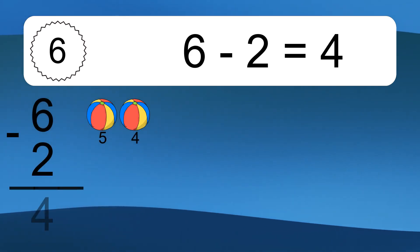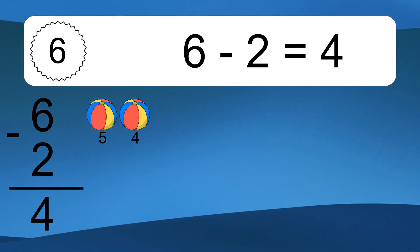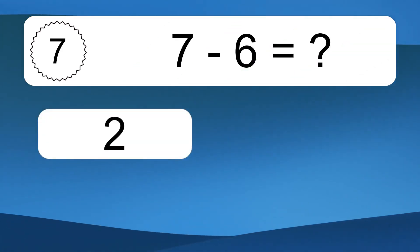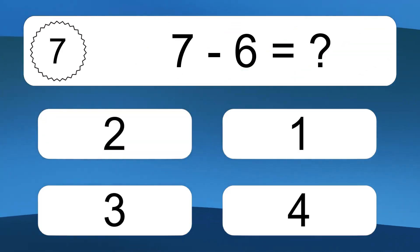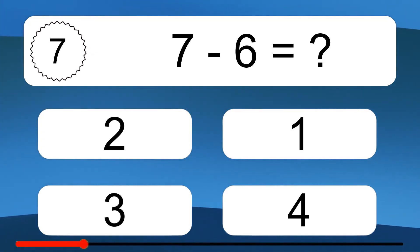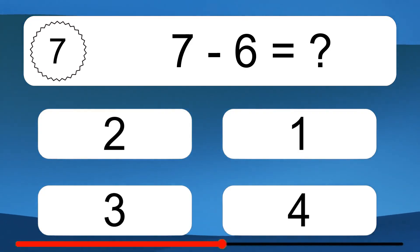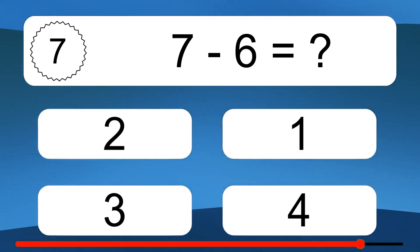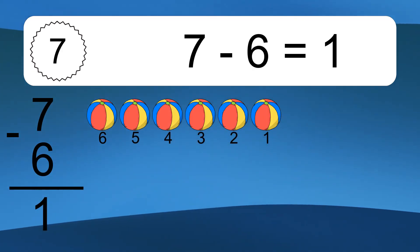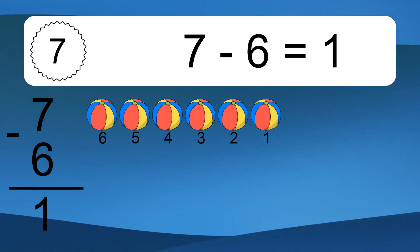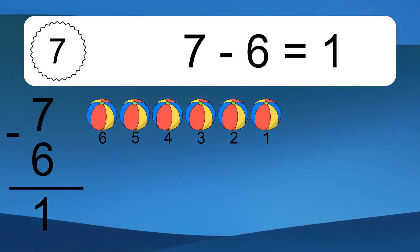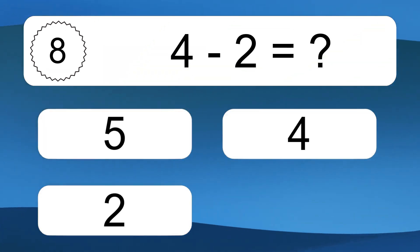6 minus 2 equals 4. Let's count it: 5, 4. 7 minus 6 equals what? Let's count it: 6, 5, 4, 3, 2, 1.